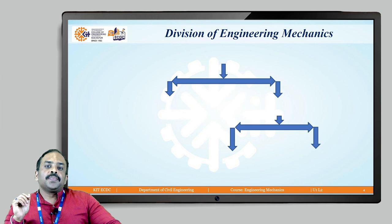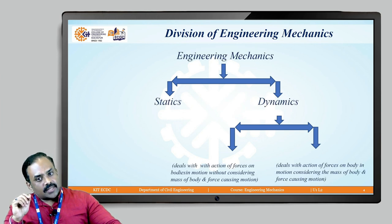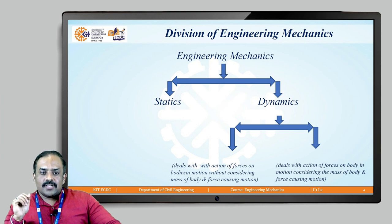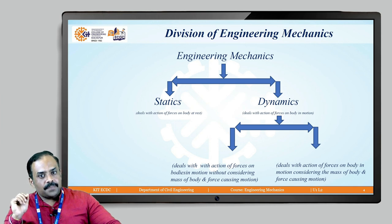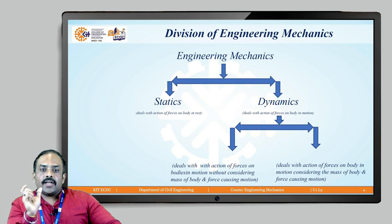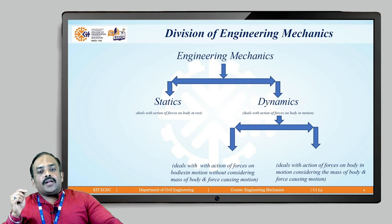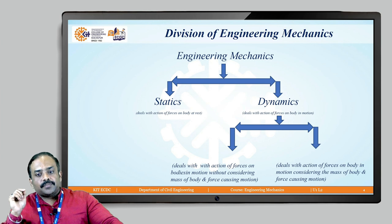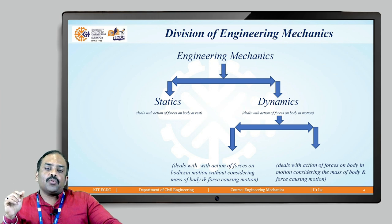Engineering mechanics is divided into two parts: first is statics and second is dynamics. Statics deals with the action of forces on a body that is at rest — in a static or rest position. Dynamics deals with the action of forces on a body when it is in motion.